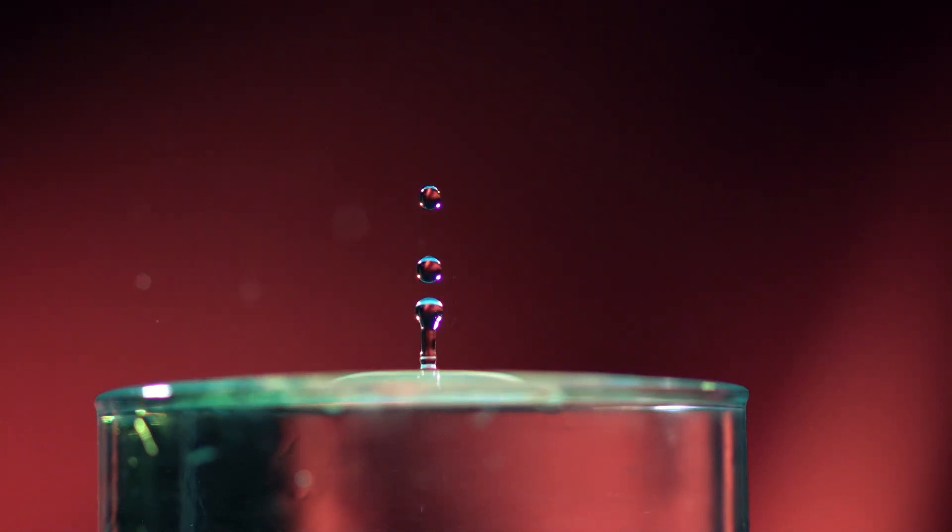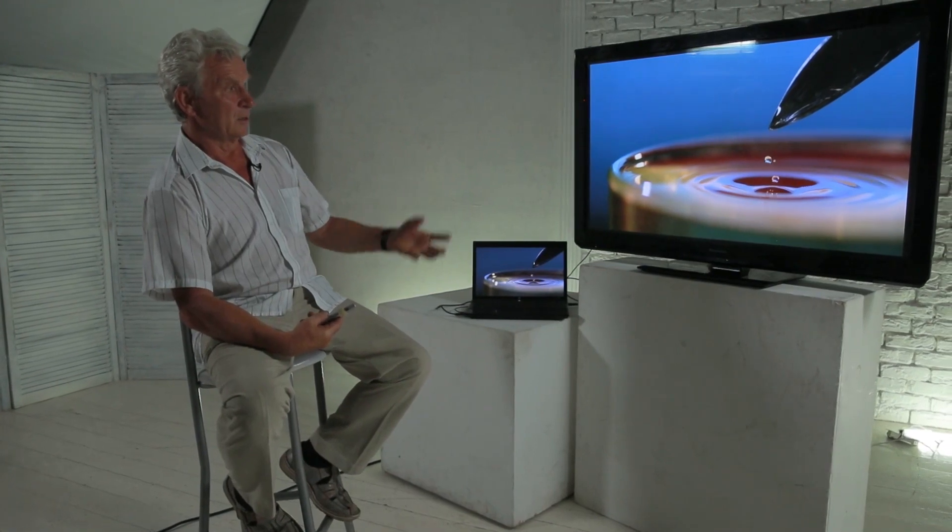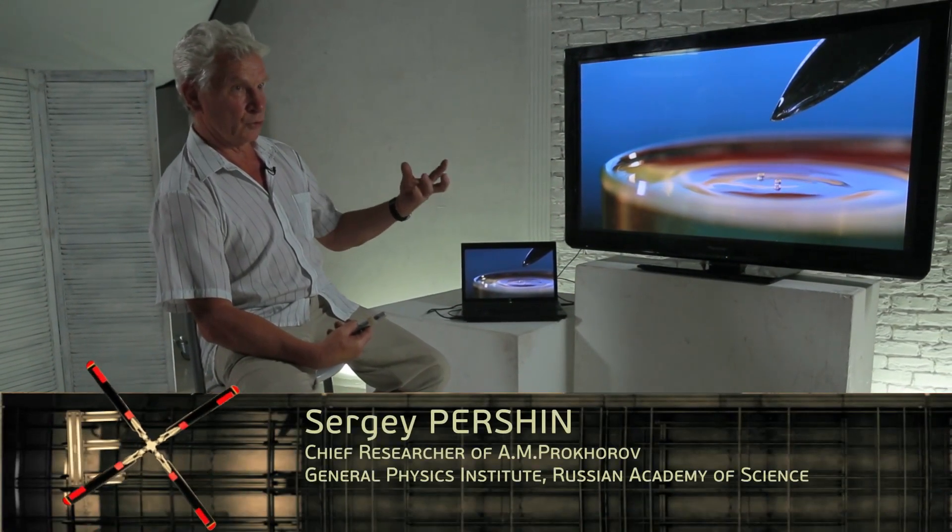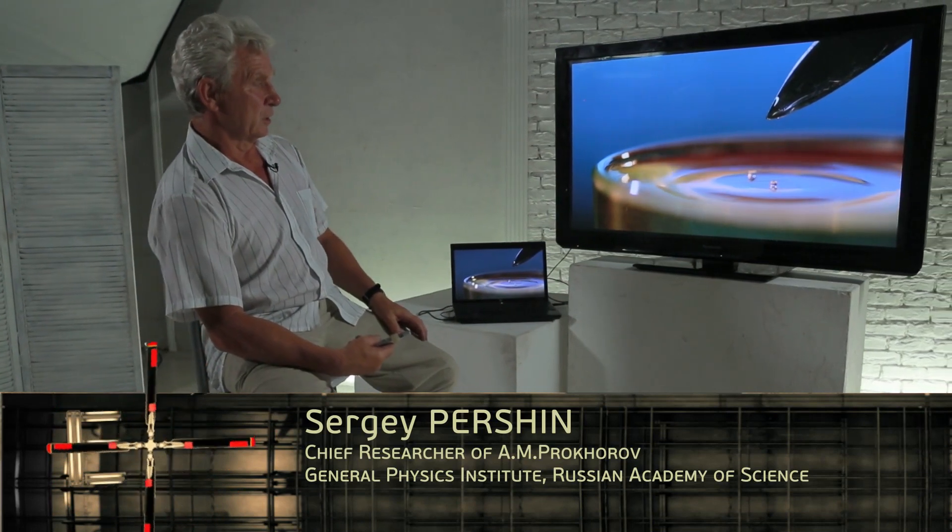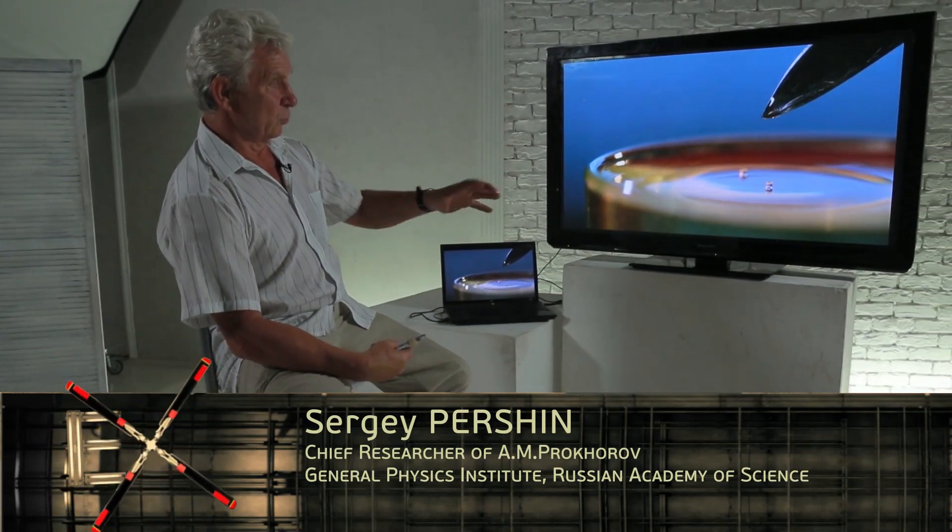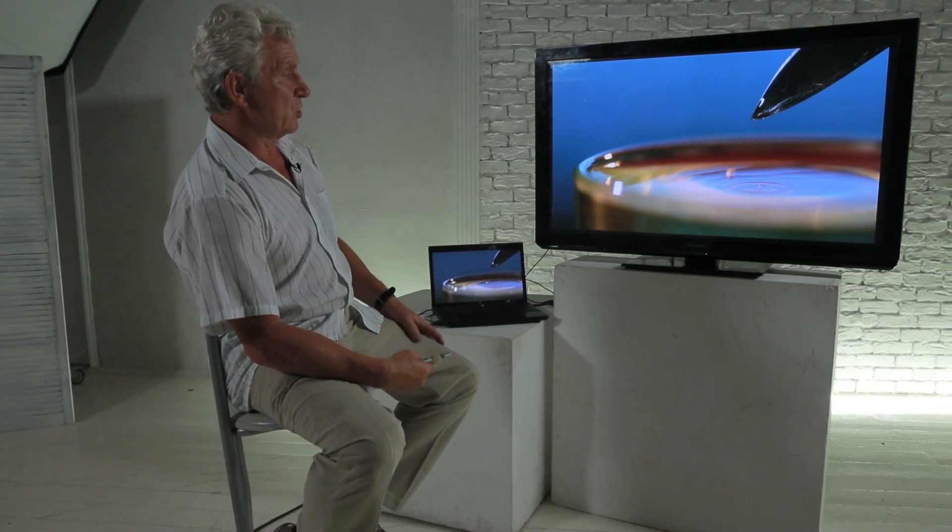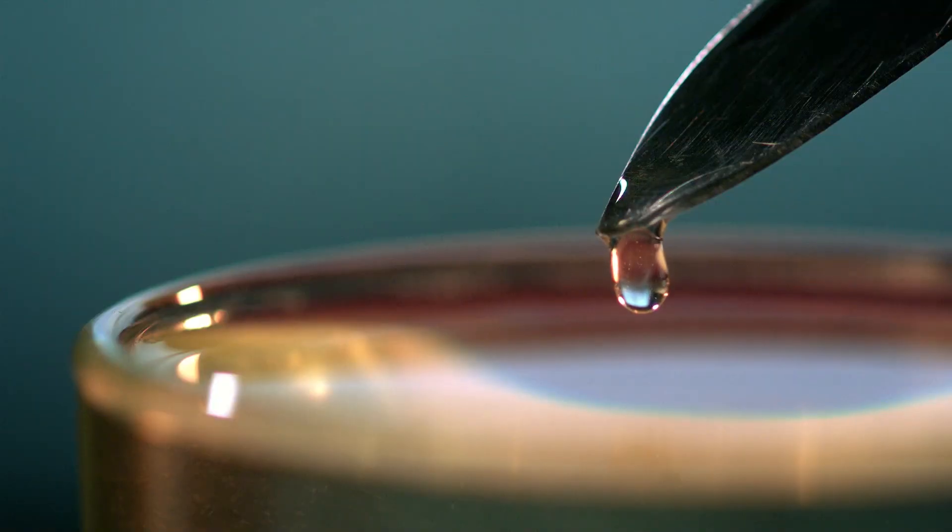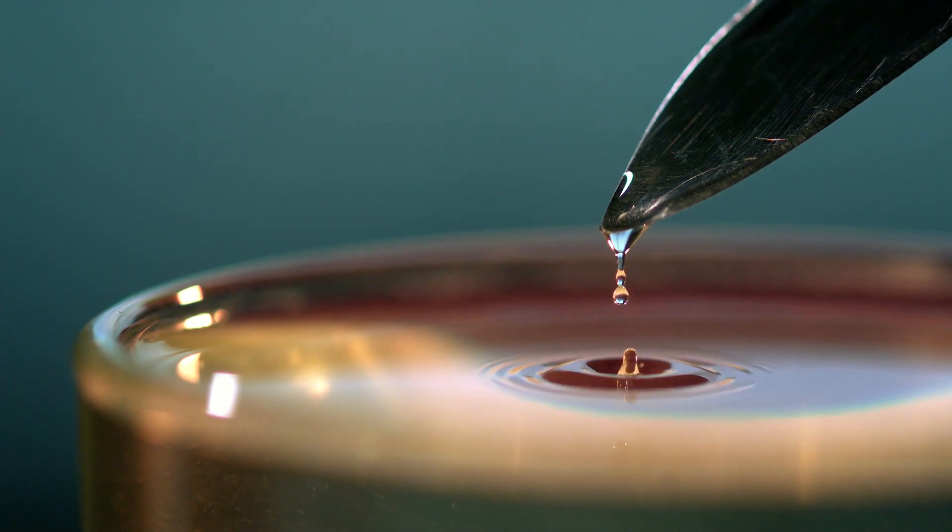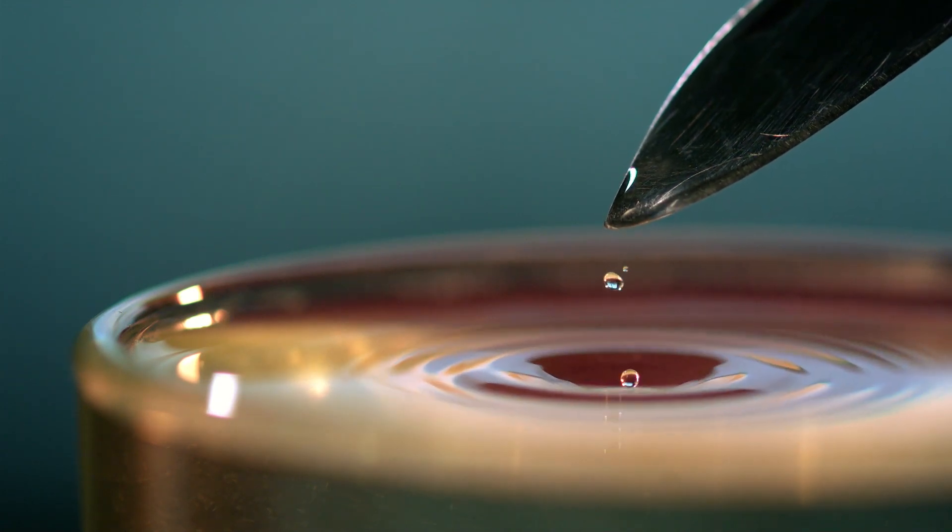The strength of the molecular interaction between molecules gives elasticity that prevents them from converging. This force, which prevents their converging, is like an elastic band or spring. It keeps the molecules at a certain distance and forms an almost ideal sphere thanks to surface tension. In space where weightlessness is present, the sphere is ideal, but here it depends on the diameter of the droplet.